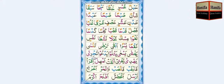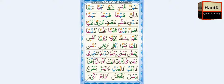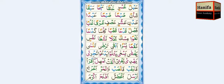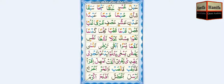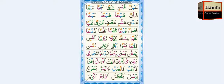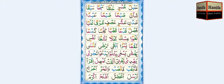Ta, Jim, Fatha — taj. Ra, Ya, Kisra — ri. Taj-ri. Ya, Ha, Fatha — yah. Dal, Ya, Kisra — di. Yah-di.